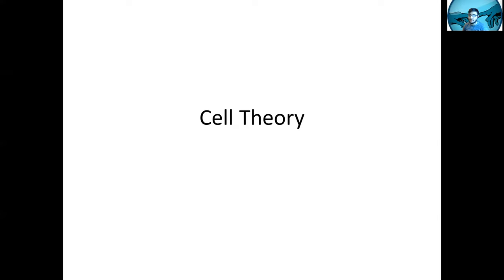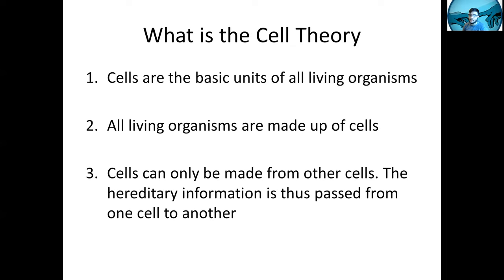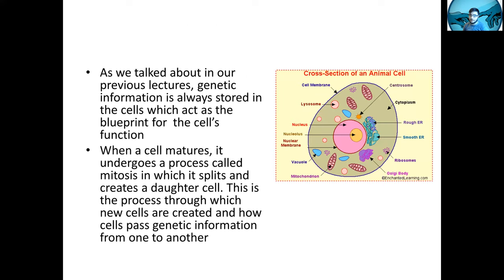First, we want to talk about cell theory. This is very fundamental to biology — so fundamental that many of you probably already know what it is. The cell theory basically says that cells are the basic unit of all living organisms, all living organisms are made up of cells, and cells can only be made from other cells. Essentially, everything that's alive is made of cells, and the only way to make more cells is to have an existing cell that makes a new one.